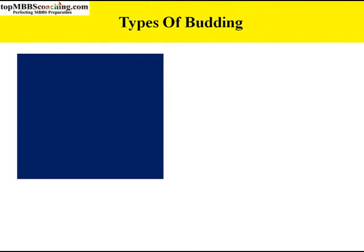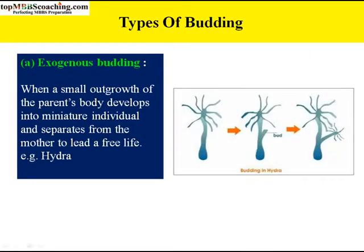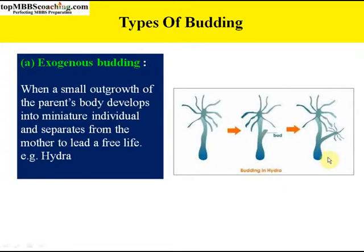There are two types of budding. The first is exogenous budding. When a small outgrowth of the parent's body develops into a miniature individual and separates from the mother to lead a free life, it is called exogenous budding — as in hydra. In exogenous budding, the bud develops externally on the parent. In the young condition, the two are internally connected to provide nourishment. Later, the bud enlarges, becomes nutritionally independent, and then separates as a new individual, as in hydra and yeast.